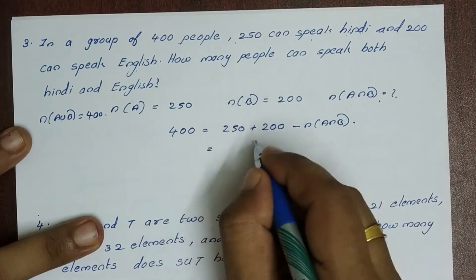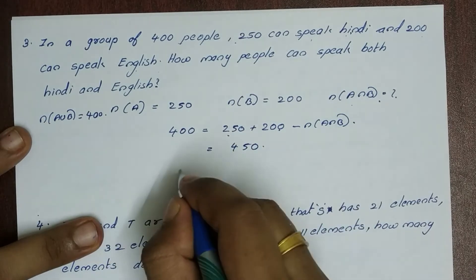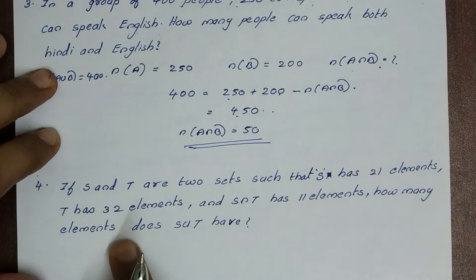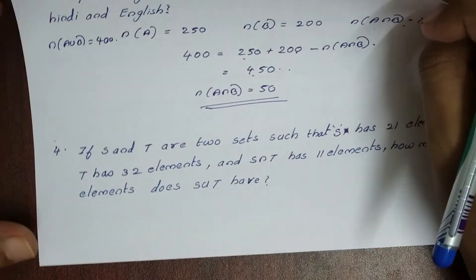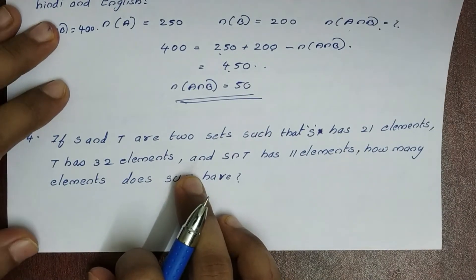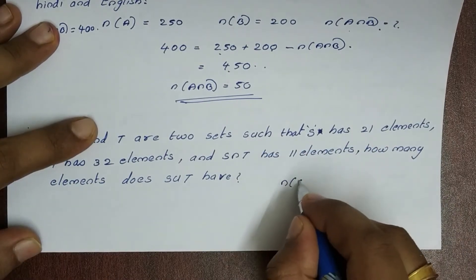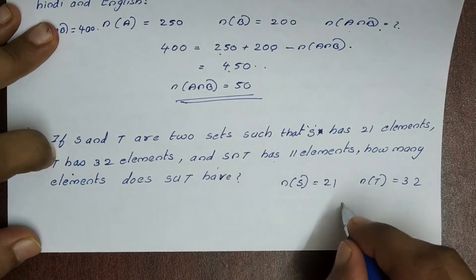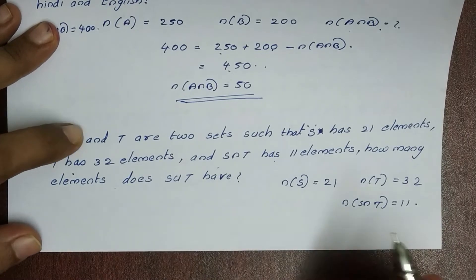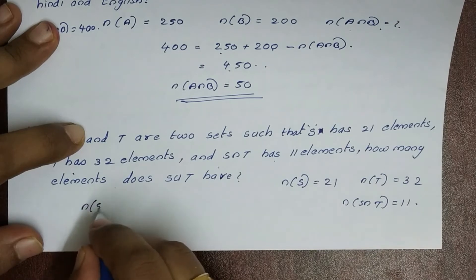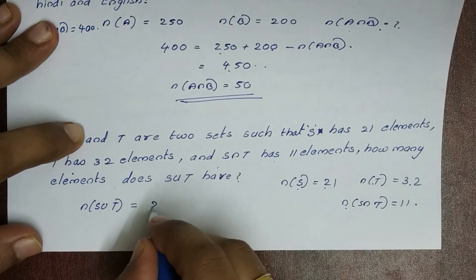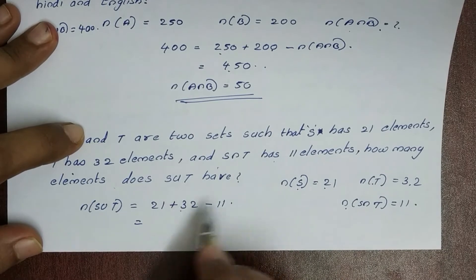Fourth problem: if S and T are two sets such that S has 21 elements and T has 32 elements, and S intersection T has 11 elements, how many elements does S union T have? The number of elements in S union T equals the number in S plus the number in T minus the number in S intersection T, that is 21 plus 32 minus 11, which equals 42.